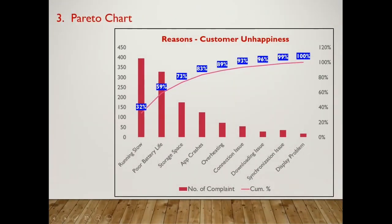I will make a separate video on each tool in detail, in which I will explain the theory and how to create it. Now look at this Pareto chart. On the horizontal axis we have reasons, on the left vertical axis frequency of reasons, and on the right vertical axis cumulative percentage of reasons. From this data, we can easily identify that 83% of the problem is due to running slow, poor battery life, storage space, and app crisis. It means that if management takes immediate action on these top reasons, management may overcome up to 83% of the problem.